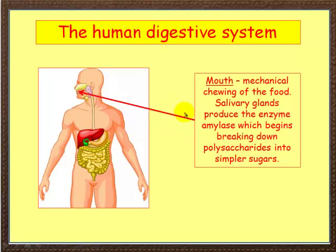When you take food in you have mechanical chewing of the food. You've also got salivary glands here and these produce the enzyme amylase. This breaks down complex polysaccharides into much simpler sugars.